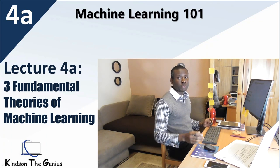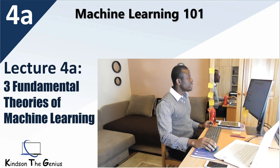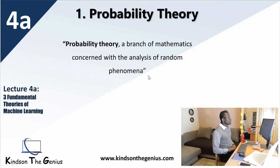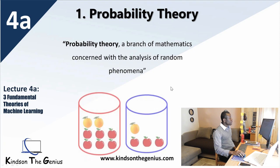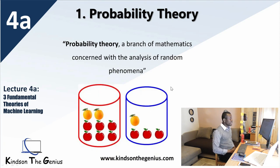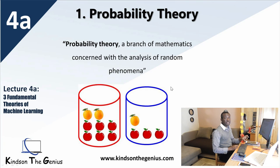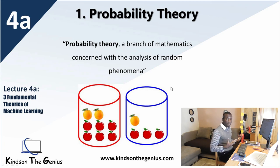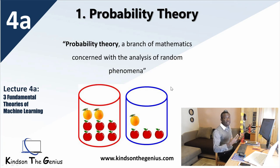Let's start with the simplest one, and that is probability theory. It is the branch of mathematics concerned with the analysis of random phenomena. To illustrate it, we have two boxes containing apples and oranges. You are trying to find the chance of taking something from this box — what is the chance that it is an orange, or what is the chance that it is an apple? That is what probability theory is all about: finding the chance of something happening at random.